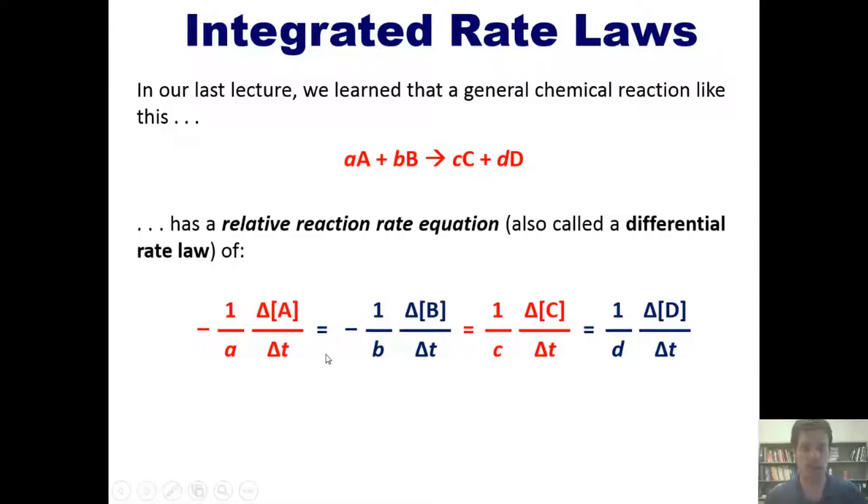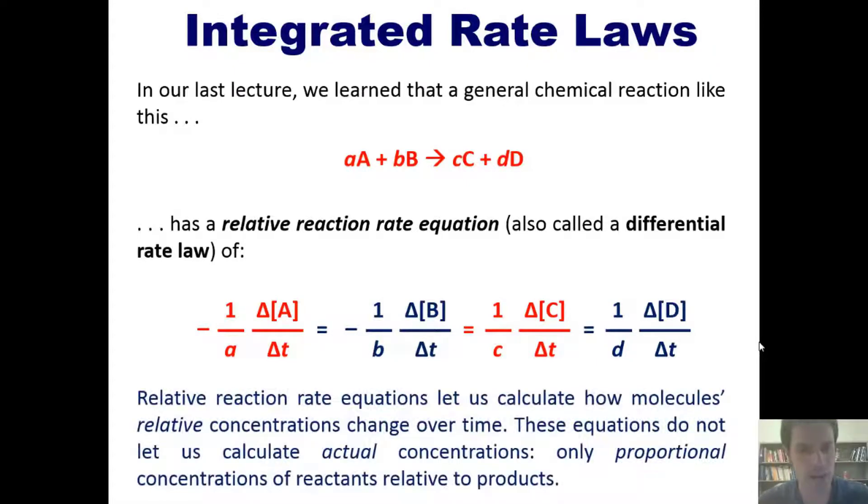And positive signs in front of the products' changes in concentrations over time. And that is because reactants disappear as the reaction proceeds, while products appear. Relative reaction rate equations let us calculate how molecules' relative concentrations change over time. These equations do not let us calculate actual concentrations, only proportional concentrations of reactants relative to products. Does that make sense?